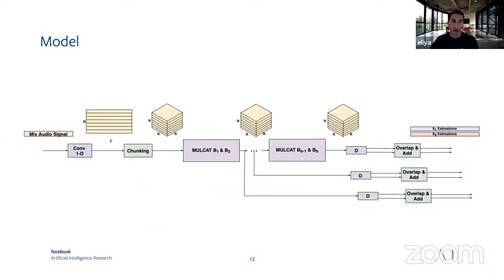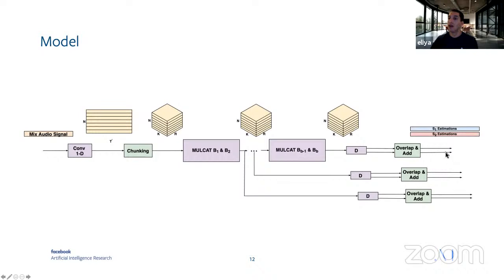In the overall model diagram, we can see the mixture input at the beginning, then the encoder — the 1D convolutional layers — producing an output tensor. We then do the chunking to get a 3D tensor. Then we have the RNN blocks, which we call MulCat. After multiple MulCat blocks, we have the decoder followed by overlap-and-add to get an estimation for each speaker. We can also see that we apply the decoder multiple times after each block, and we can apply the loss term after each one of the blocks.